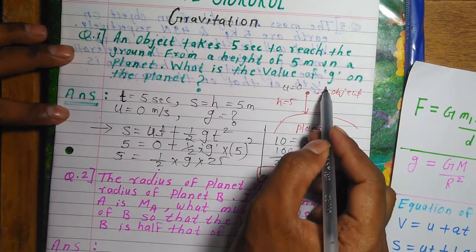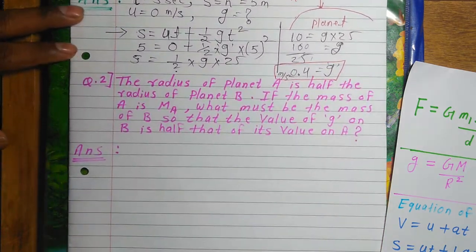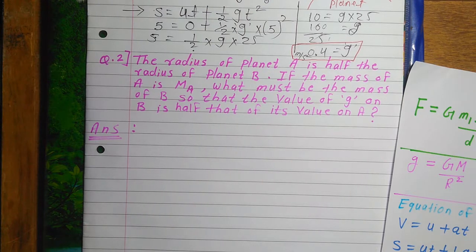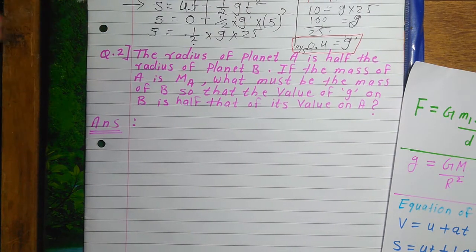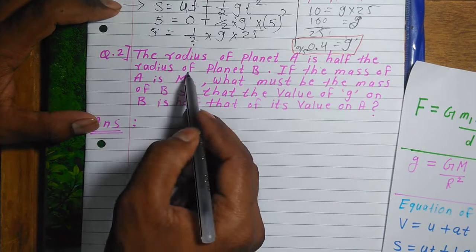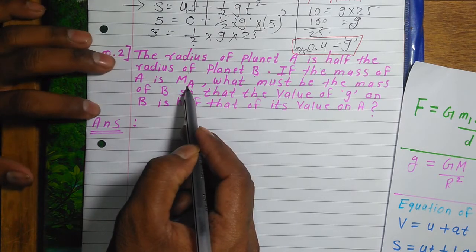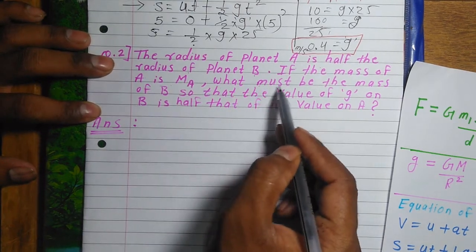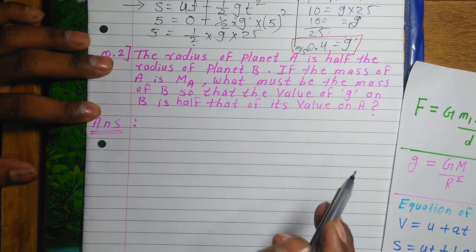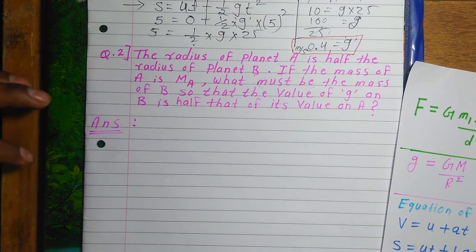Now let's move to Problem 2. After understanding Problem 1, we go to Problem number 2. This is a slightly longer one. Let's read what is given: The radius of Planet A is half the radius of Planet B. If the mass of A is MA, what must be the mass of B so that the value of g on B is half that of the value on A?